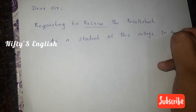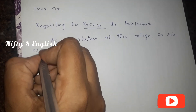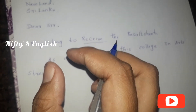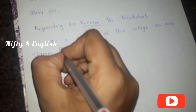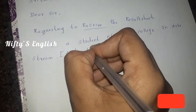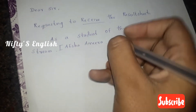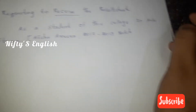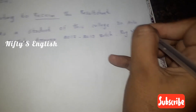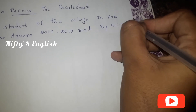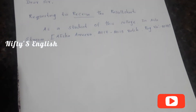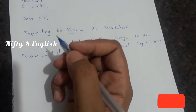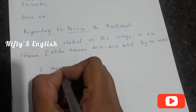I am a student in the arts stream. I put my name, batch, and registration number in brackets. This is the introduction. The second part — describing the issues and the request to do the needful — are both in the second paragraph.